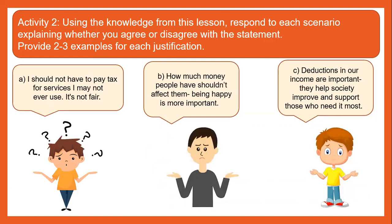For the second activity, using the knowledge from this lesson, think about each statement below and explain whether you agree or disagree, providing two to three reasons for each. Statement A: 'I should not have to pay tax for services I may not ever use — it's not fair.' Statement B: 'How much money people have shouldn't affect happiness — happiness is more important.' Statement C: 'Deductions from our income are important — they help society improve and support those who need it most.' Which statements do you agree or disagree with, and why? Pause here to complete this task.